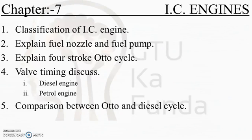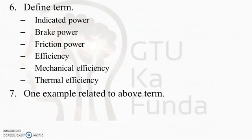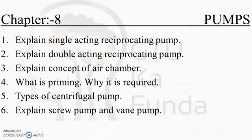IC engine topics continue with the diesel engine, petrol engine, and a comparison between the Otto and diesel cycles. In the dedicated IC engine subject in mechanical engineering, you will find the valve timing diagram for four-stroke and two-stroke engines in detail. Continuing with IC engines, important terms include indicated power, brake power, friction power, mechanical efficiency, thermal efficiency, and examples from this chapter.